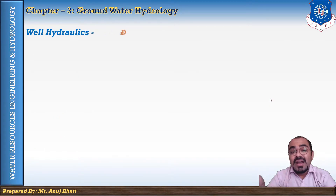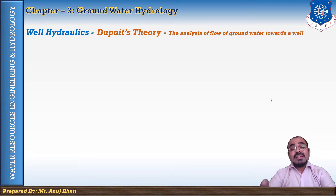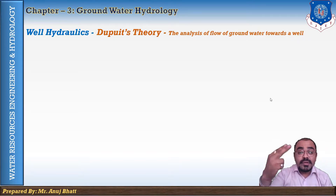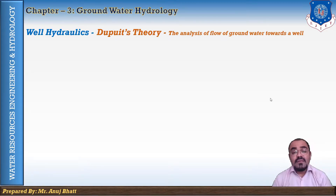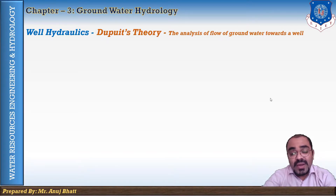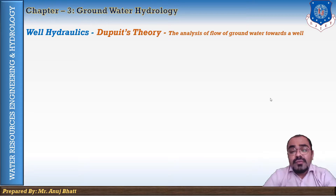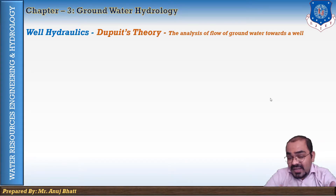Now let's discuss well hydraulics. When a well is penetrated into an extensive homogeneous aquifer, the water table initially remains horizontal. When the well is pumped and water is removed, this results in a circular depression or drawdown curve. The drawdown at any point is the vertical distance by which the water table or piezometric surface is lowered.